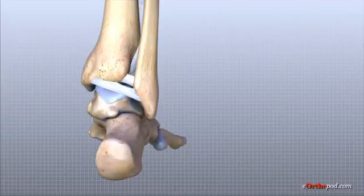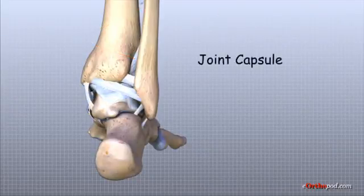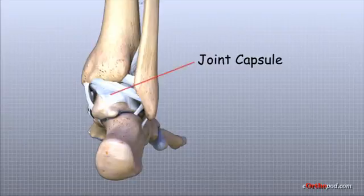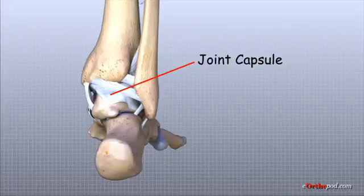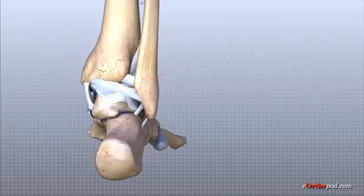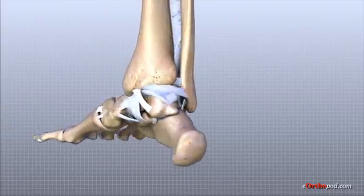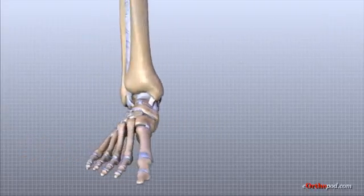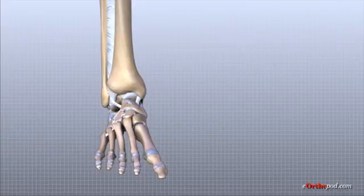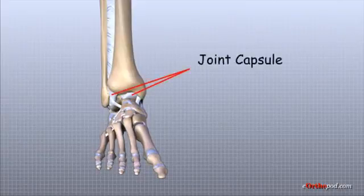The ligaments that surround the ankle joint help form part of the joint capsule. The joint capsule is a watertight sac that forms around all joints. It is made up of the ligaments around the joint and the soft tissues between the ligaments that fill in the gaps and form the sac.